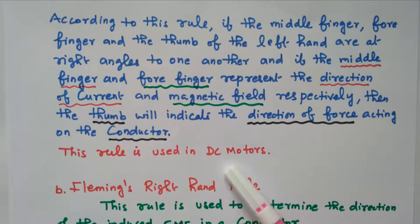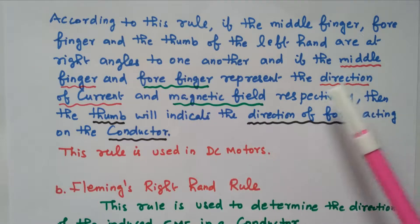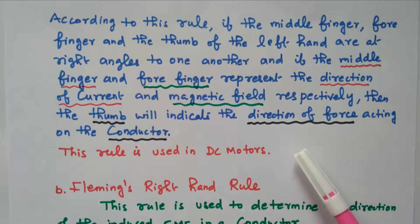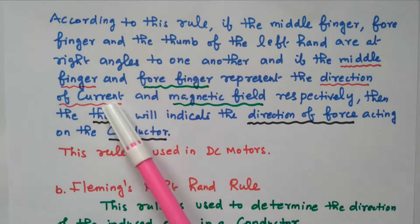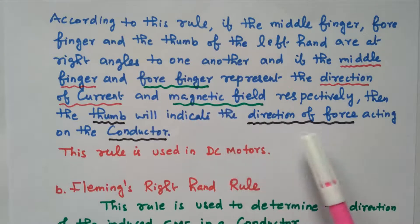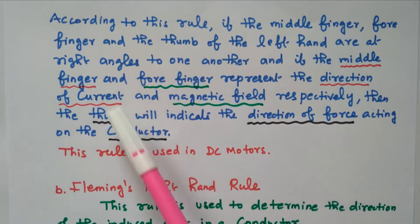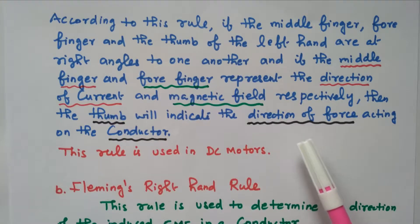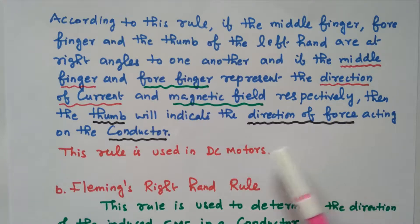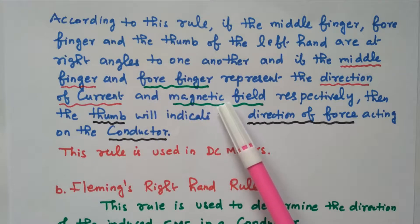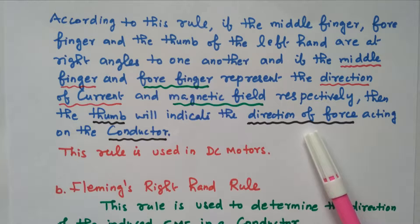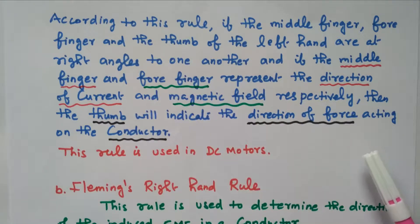This rule is used in DC motors. Using it, we can identify three quantities: direction of current, magnetic field, and direction of force on the conductor. In a DC motor, when current flows, flux is produced; due to the rate of change of flux, the conductor starts rotating. So these three quantities — current, magnetic field, and motion — are all perpendicular to each other, as given by Fleming's left-hand rule.